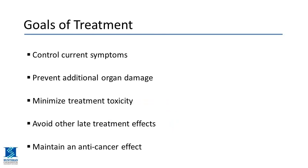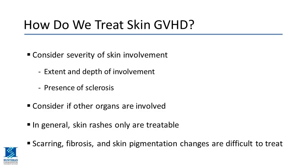When thinking about treatment, several principles guide transplant doctors. We want to control current symptoms, prevent additional organ damage, minimize treatment toxicity — avoiding systemic steroids if possible — avoid late treatment effects, and ensure we're treating with medications that don't put you at risk for your original blood disorder returning. We look at how much skin is involved by body surface area and how deep the chronic GVHD is affecting tissue.